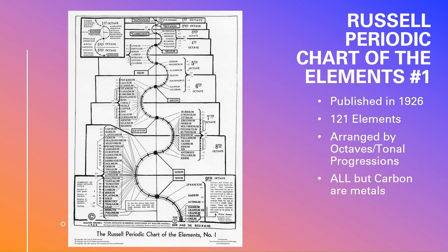Here we see the Russell Periodic Chart of the Elements, number one. This was first published in 1926 in Walter Russell's book, The Universal One. It was originally published as a ten-octave chart, later revised to a nine-octave chart. It contains 121 elements, so more elements than the Mendeleev Chart.